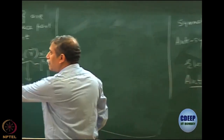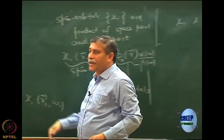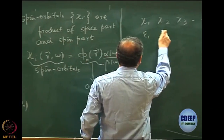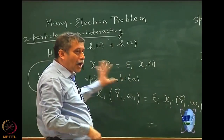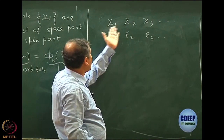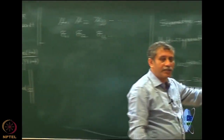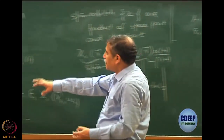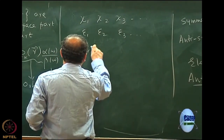Let us assume we have solved this problem and obtained a set of spin orbitals chi1, chi2, chi3, etcetera, which are space orbitals with spin attached, each having eigenvalue epsilon1, epsilon2, epsilon3, and so on. Trivially, the space parts can be solved separately, in which case the eigenvalues may be equal if two spin orbitals share the same space part. But in general I write them as E1, E2, E3. I have a set of spin orbitals and eigenvalues for this one-particle problem. Now I want to construct the wavefunction for the two-particle problem.